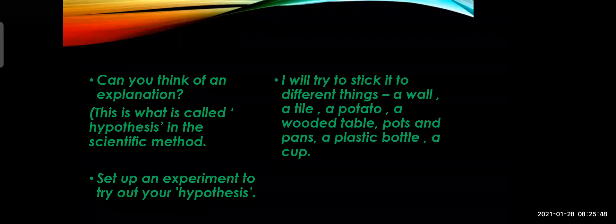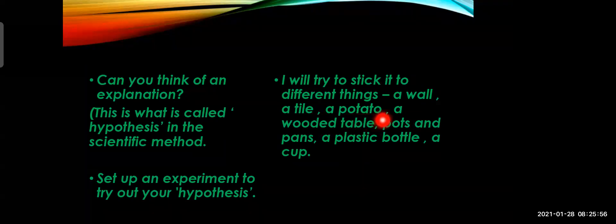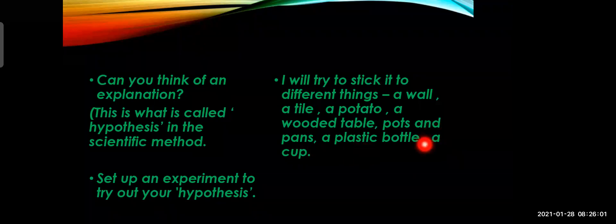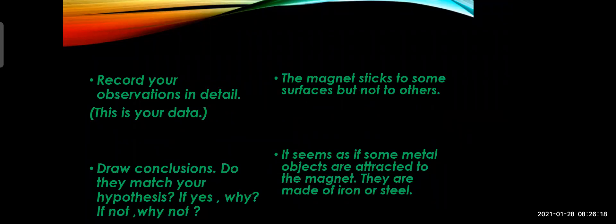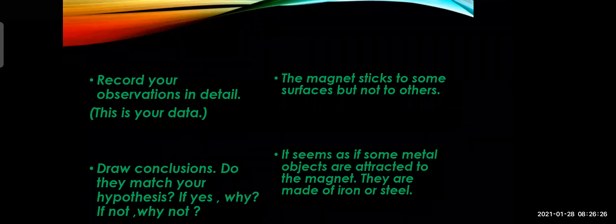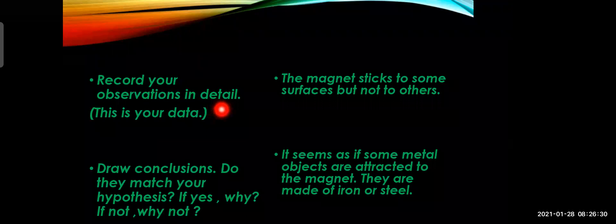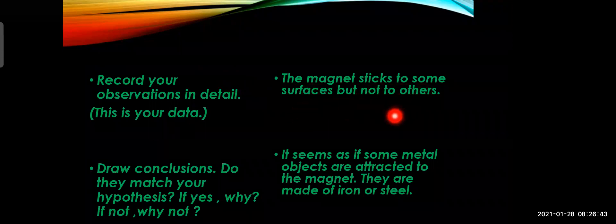For the experiment, try sticking the magnet to different things at home — a wall, a tile, a potato, a wooden table, pots and pans, a plastic bottle, a cup, and whatever else is available. After the experiment, record your observations in detail — this will be your data. You will observe that the magnet sticks to some surfaces but not to others.